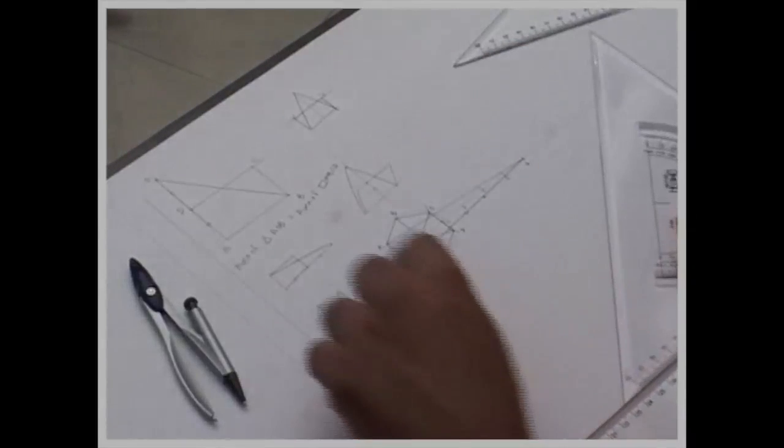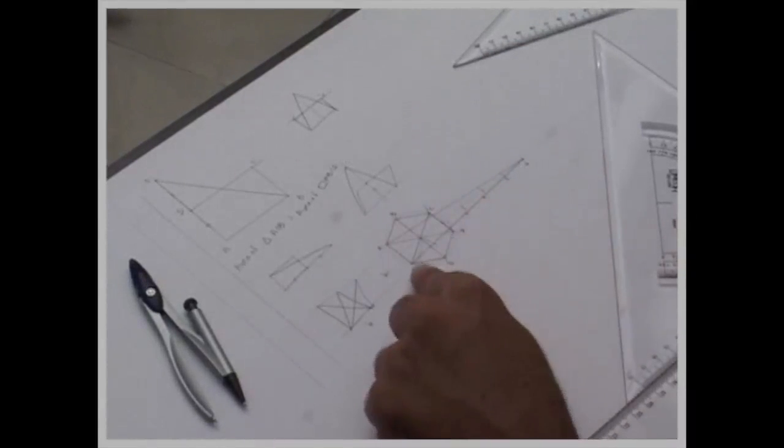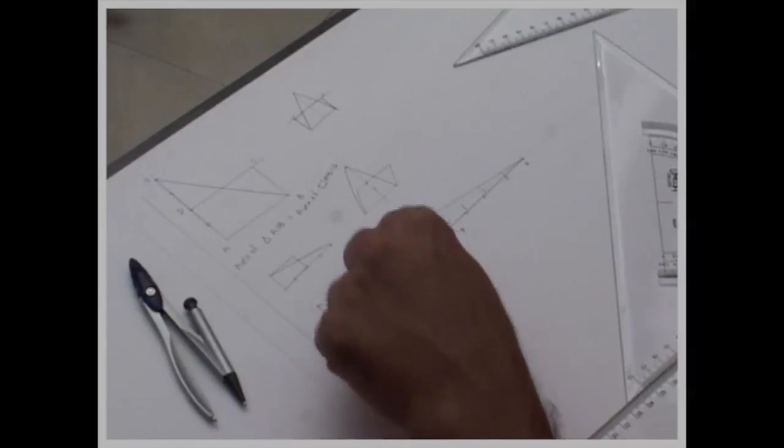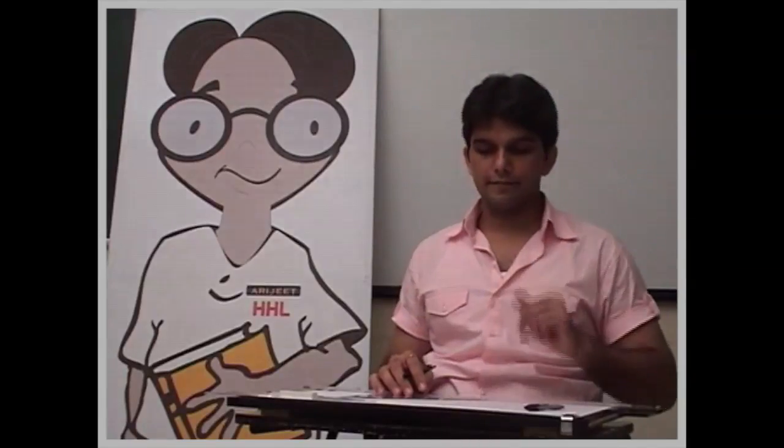So area of triangle A6F equals area of hexagon ABCDEF. The same theorem can be applied for a pentagon as well.